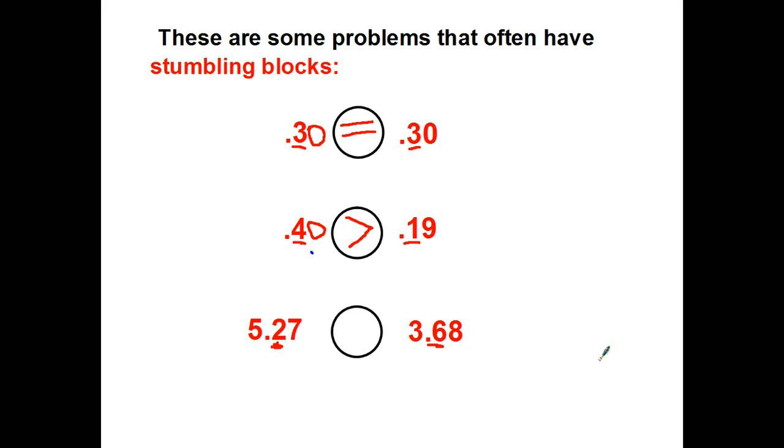A third problem people sometimes run into is that they get so wrapped up in looking at the decimal numbers, they forget to look at the whole number. Here we've got 2 tenths and here we've got 6 tenths. But that doesn't really matter. Look at your whole number. There's 5 and there's 3. If your whole number is bigger, then it doesn't really matter what your decimal is. 5 is bigger than 3. Would you rather have 5 dollars and 27 cents or 3 dollars and 68 cents? That's kind of a no brainer.